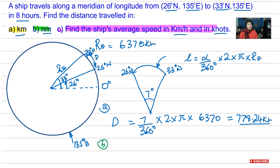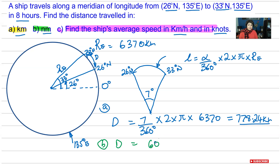For Part B, we are asked to find distance in nautical miles. We're not dealing with distance along the latitude where we have cosine and all that — this is just distance along the longitude. So the distance in nautical miles is simply 60 minutes times the angular difference between the two latitudes, which is 7 degrees. 60 times 7 gives us 420 nautical miles.